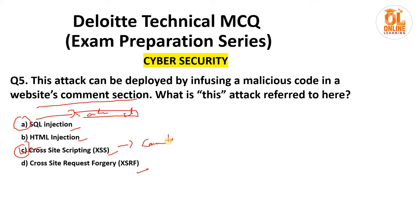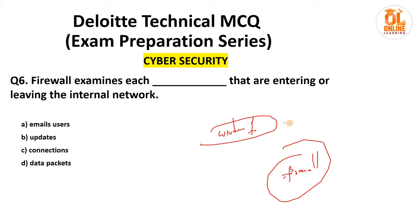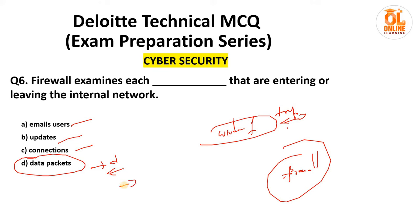The last question for the cybersecurity section: a firewall examines each what that is entering or leaving the internal network. A firewall is present everywhere — even Windows has a default firewall. It determines which traffic needs to go in and which needs to go out. This cannot be determined using email, users, updates, or connections — it can only be determined using data packets. So option D, data packets, is the correct answer.